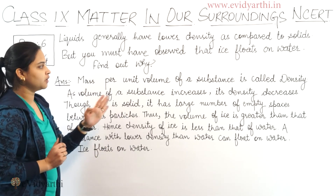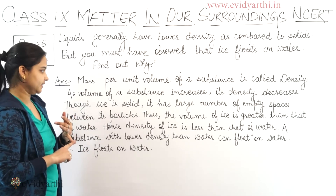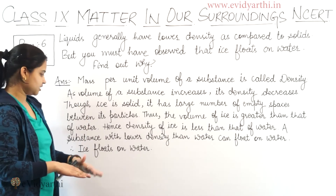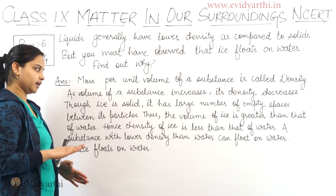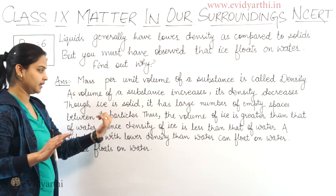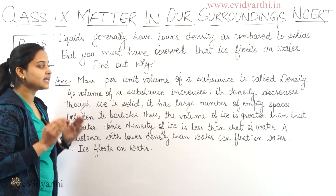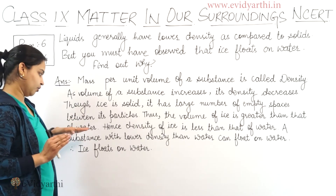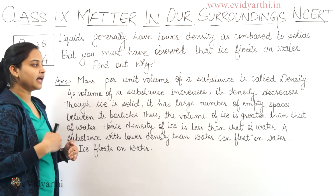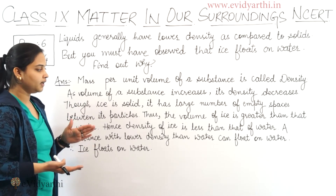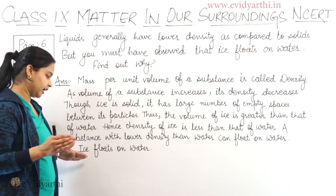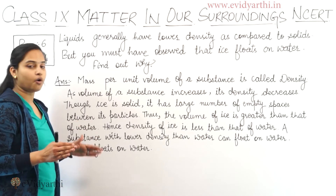I have written: mass per unit volume of a substance is called density. As the volume of a substance increases, its density decreases. Though ice is a solid, it has a large number of empty spaces between its particles. Thus, the volume of ice is greater than that of water. Hence, the density of ice is less than that of water. A substance with lower density than water can float on water. Therefore, ice floats on water.